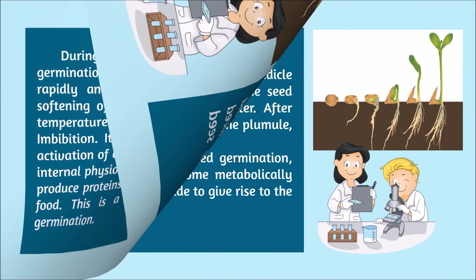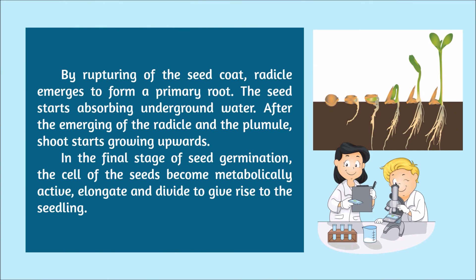By rupturing of the seed coat, the radicle emerges to form a primary root. The seed starts absorbing underground water. After the emerging of the radicle and the plumule, the shoot starts growing upwards. In the final stage of germination, the cells of the seeds become metabolically active, elongate, and divide to give rise to the seedling.